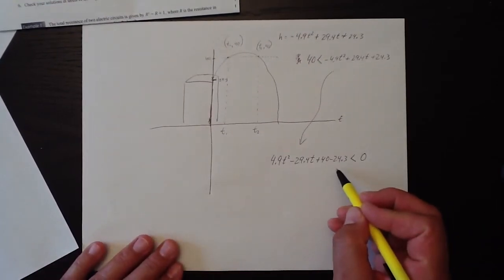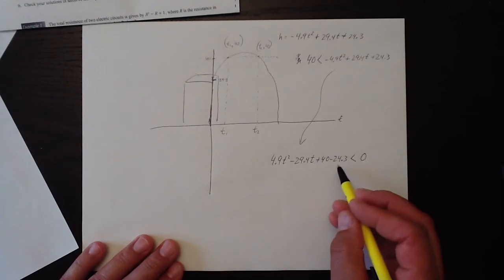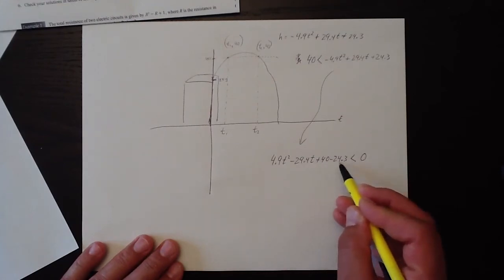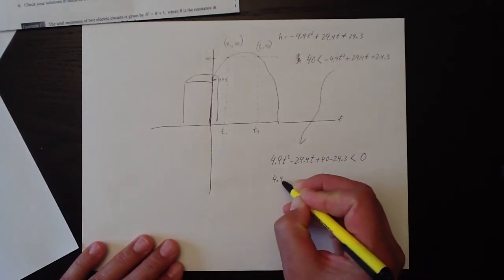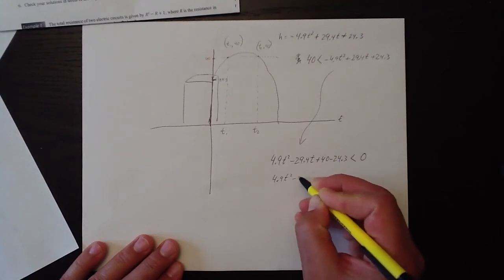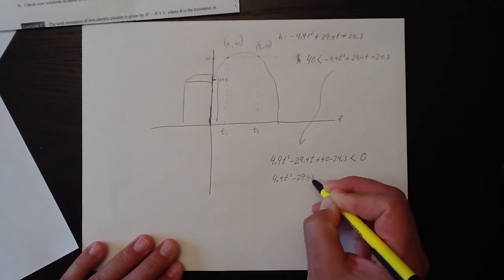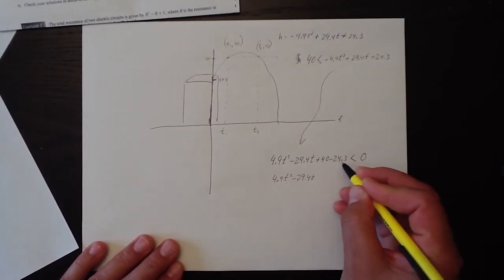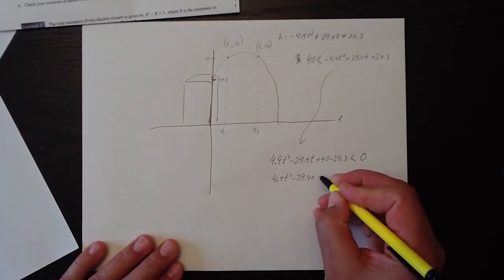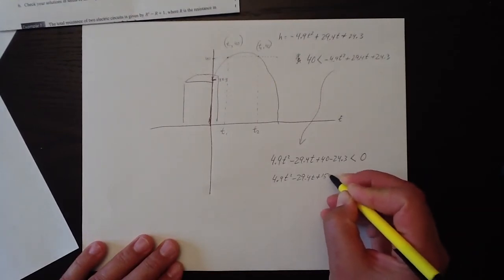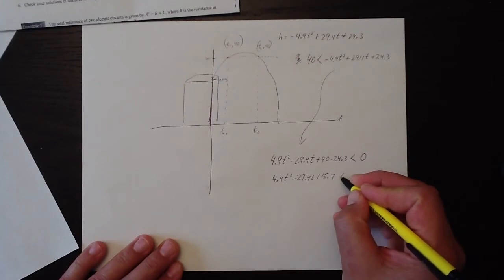So we simplify this a little bit because this is still a bit of a problem. So 4.9 t squared minus 29.4 t plus 40 minus 24.3 gives us plus 15.7. It's less than 0.